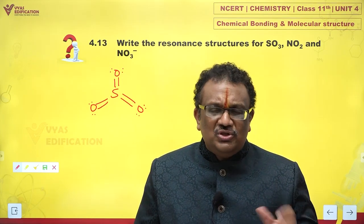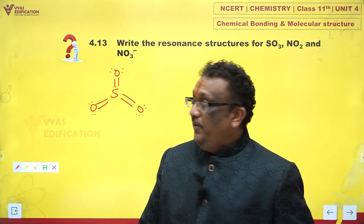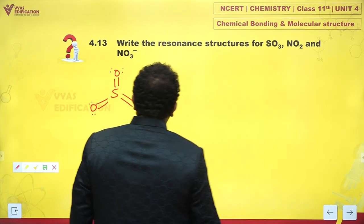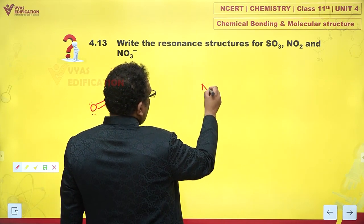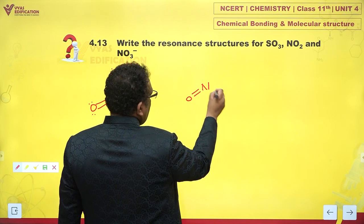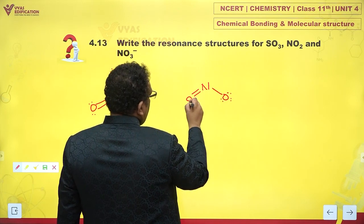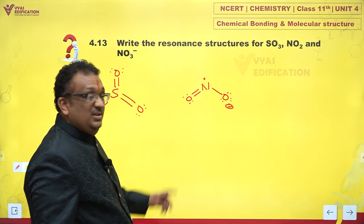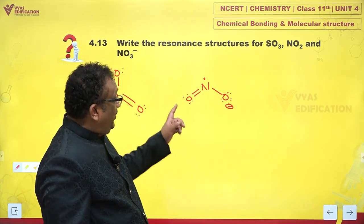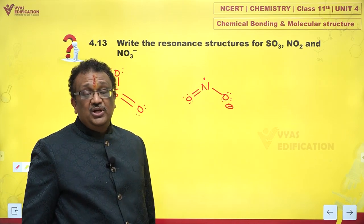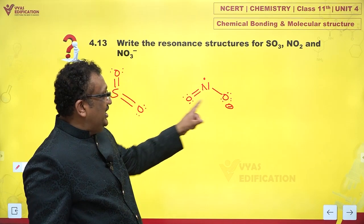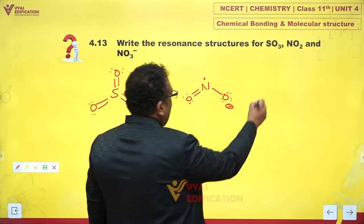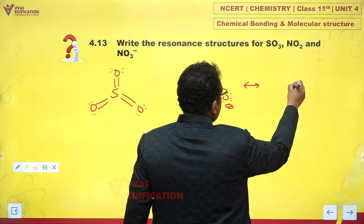If you have NO3 minus and NO2, it is very interesting. This is NO2, an odd electron molecule, and the moment you write down the structure, there is an objection: why minus here and double bond here? So you can see that there is a contributing structure.